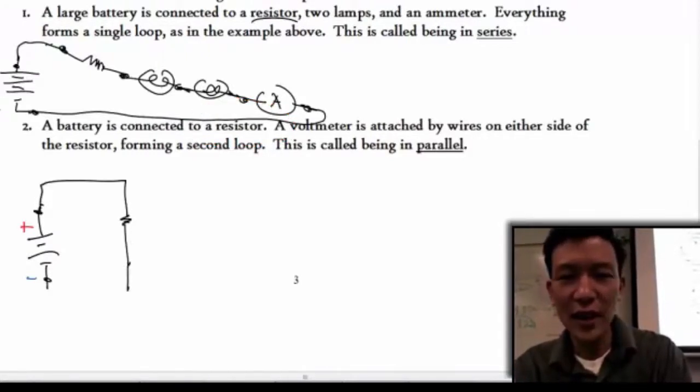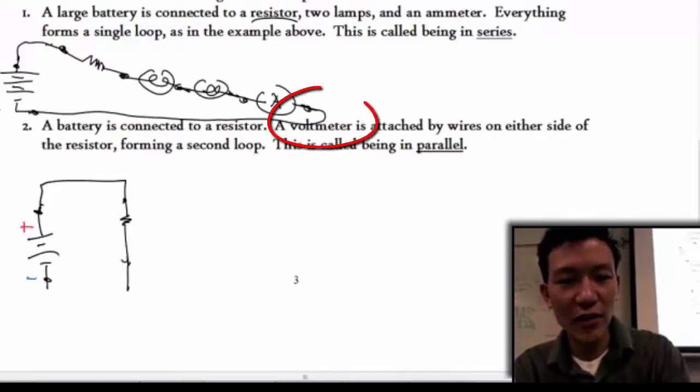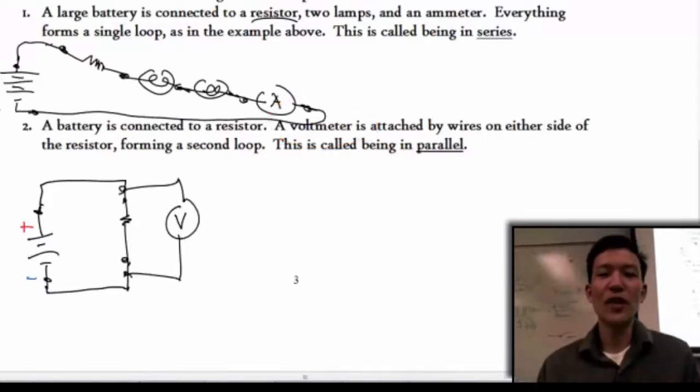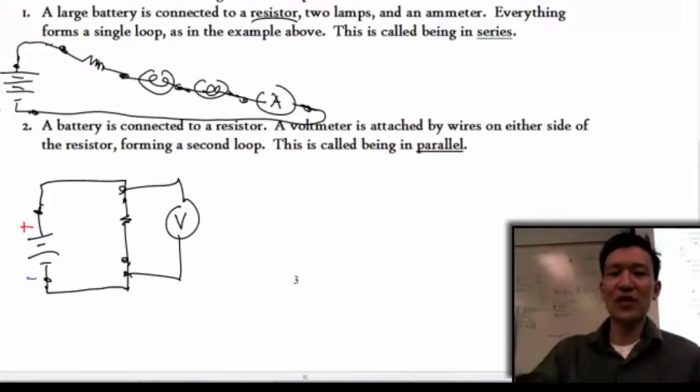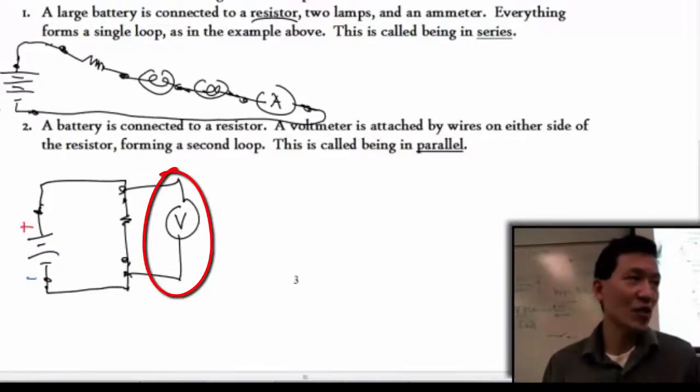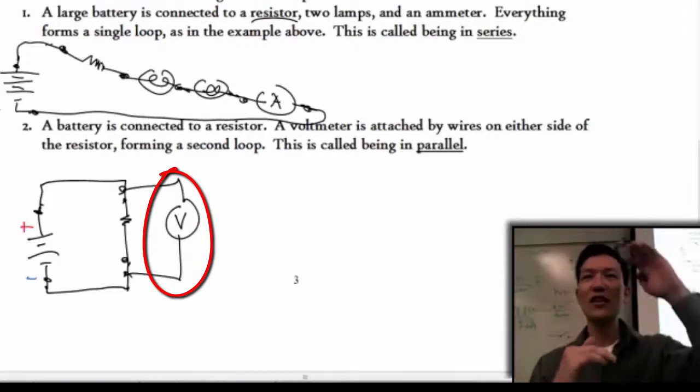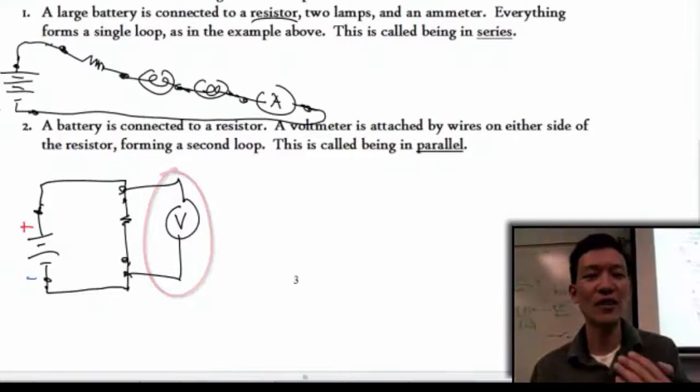And then it says that we have a voltmeter on either side of the resistor forming a second loop. This is called being in parallel. So the trick is, any time you want to measure voltage, you have to put it off to the side to form a second loop. Otherwise, you don't get a reading. The reason why is voltage measures the energy difference you can think of as between two points there. It's the potential difference there.